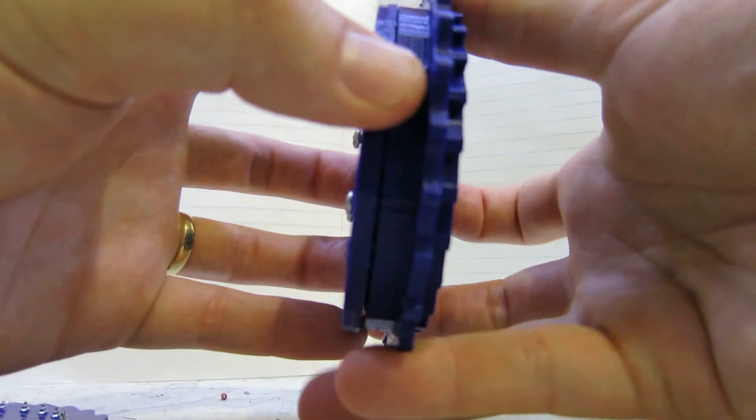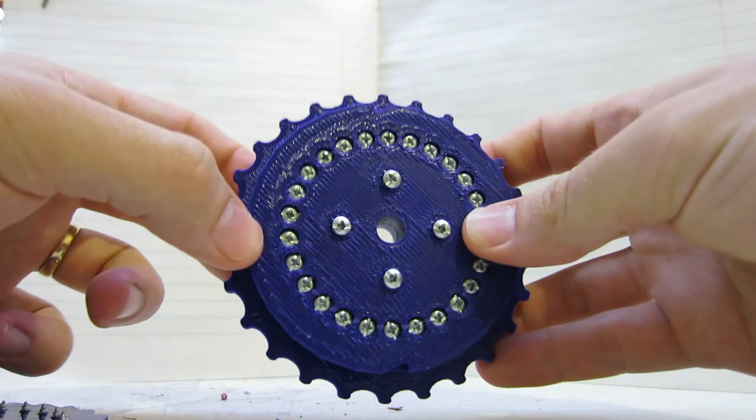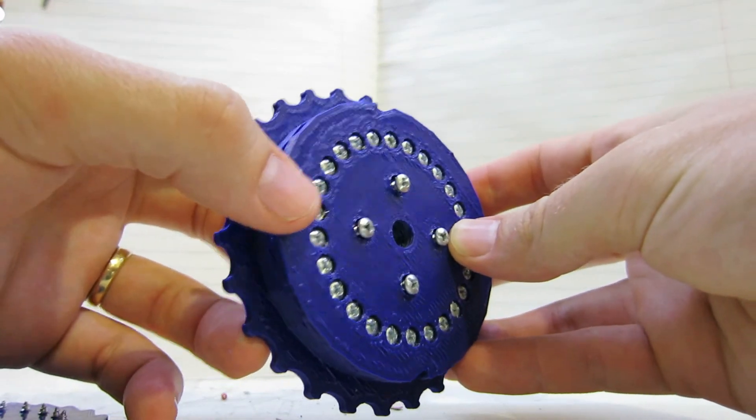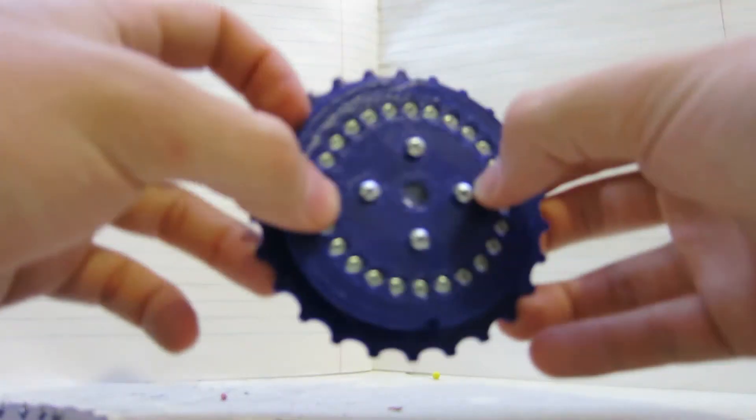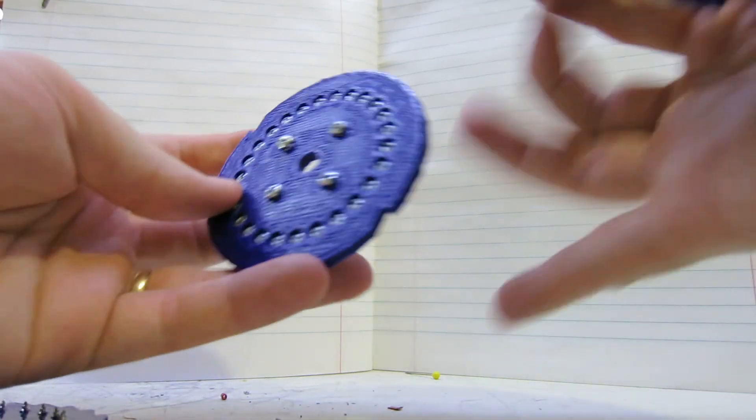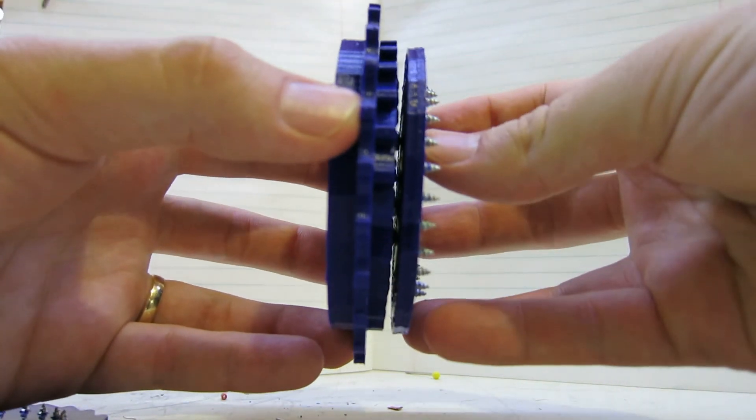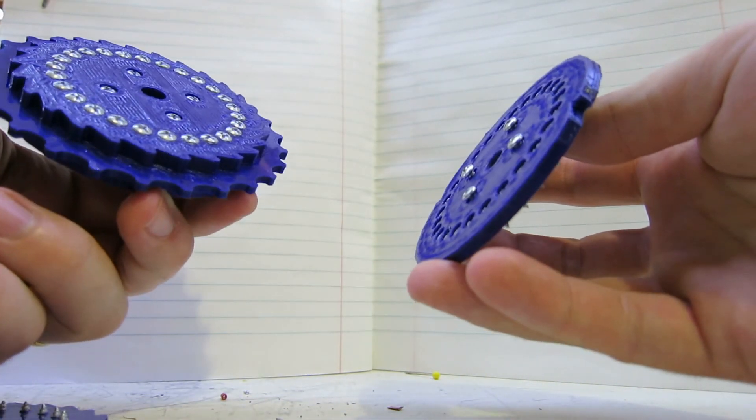So this is one of four rotors that'll be going along the shaft. And the signal will come in on that side, get swapped through the wiring, come out on that side, and then go into the next rotor along. Etc.